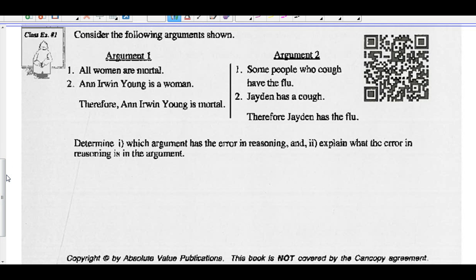Let's look at example 1. Consider the following arguments shown. Argument 1. All women are mortal. Second statement, Anne Irwin-Young is a woman. Therefore, we come to this conclusion, Anne Irwin-Young is mortal.